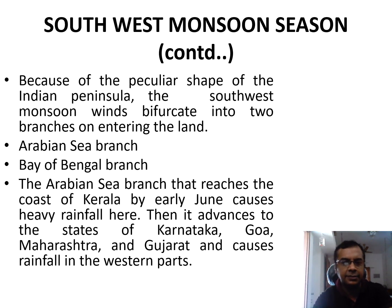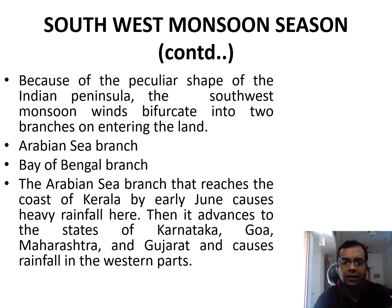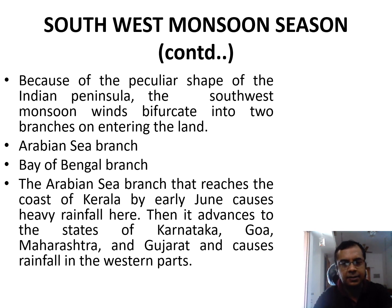The Arabian Sea Branch reaches the coast of Kerala by early June and causes heavy rainfall there. It then advances to the states of Karnataka, Goa, Maharashtra, and Gujarat, causing rainfall in the western parts of India.